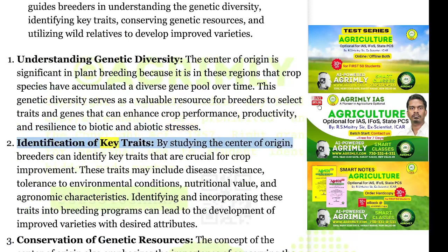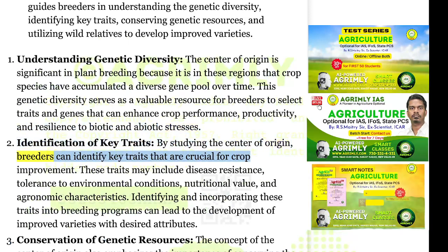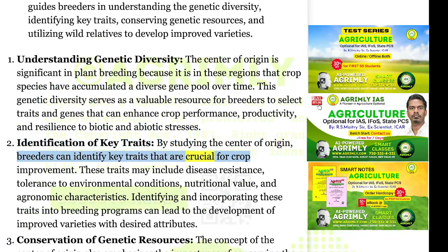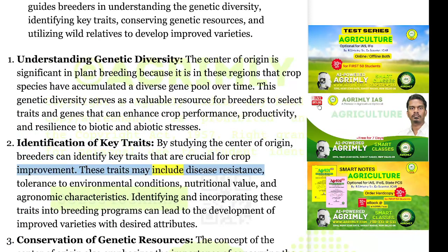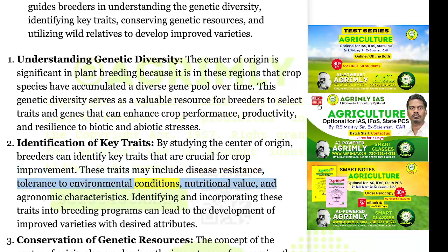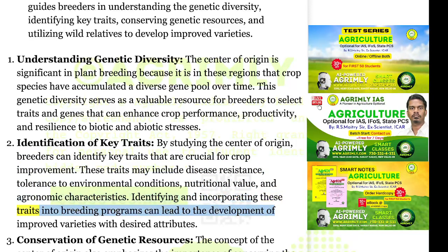Identification of key traits: By studying the center of origin, breeders can identify key traits that are crucial for crop improvement. These traits may include disease resistance, tolerance to environmental conditions, nutritional value, and agronomic characteristics. Identifying and incorporating these traits into breeding programs can lead to the development of improved varieties with desired attributes.